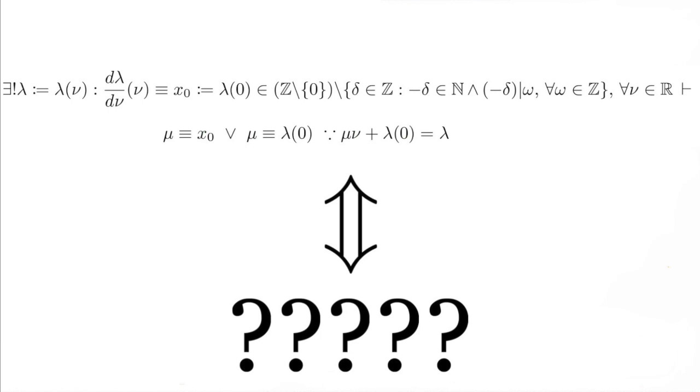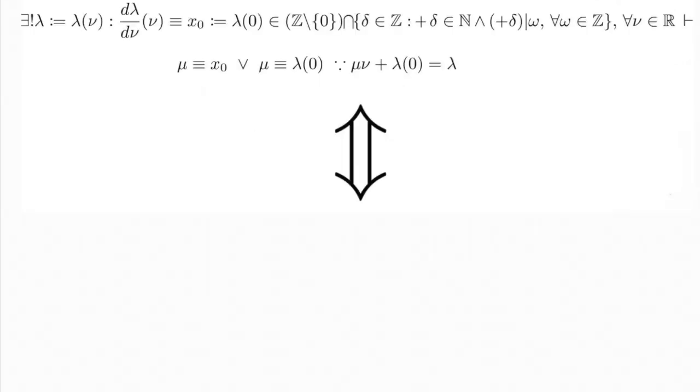Going back now to the challenge we started with. We read it in the following way. From the fact that there exists a unique lambda defined as a function of nu such that the derivative of lambda with respect to nu is equivalent to x index 0, which is defined as lambda of 0, which is defined as an element of the set composed of the integers without 0 intersected with the set of all elements delta belonging to the integers such that delta is natural and it divides omega for all omegas belonging to the integers.